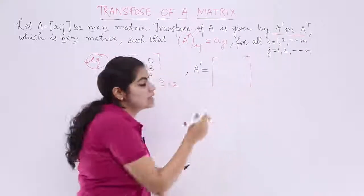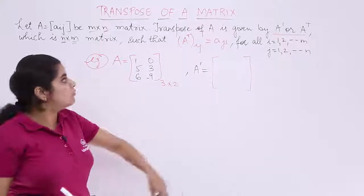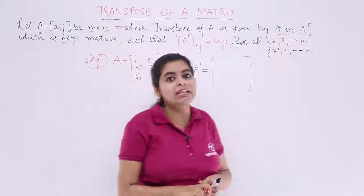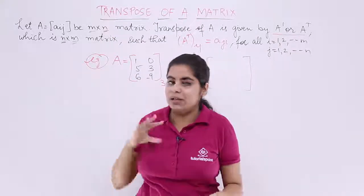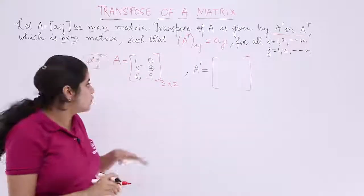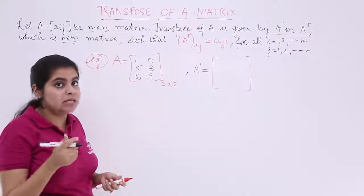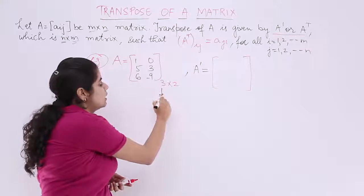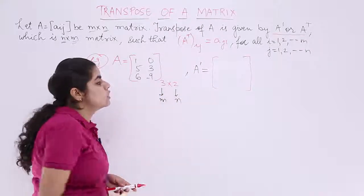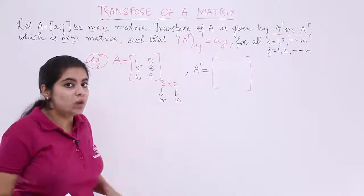First thing that you need to consider very importantly: if you have been given a matrix m by n, the transpose is n by m. That means the order changes. So if it is 3 by 2, where 3 is your number of rows and 2 is the number of columns, now what is the story?